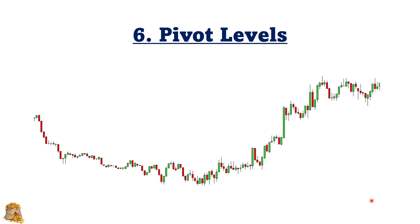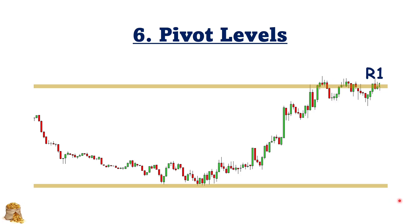Pivot levels and pivot points are also good support and resistance levels. For how to calculate pivot points or more information, you can search online, and most broker platforms will provide this indicator so you can set it up very easily. For example, we have the R1 level and the S1 level. You can see the market goes down to test this S1 level two times, and then it goes up to test this R1 level four times. So we can use pivot levels as support and resistance levels as well.